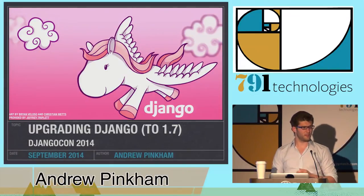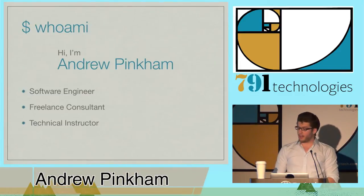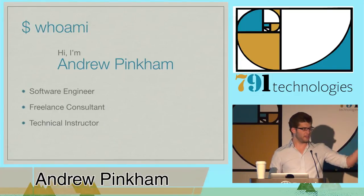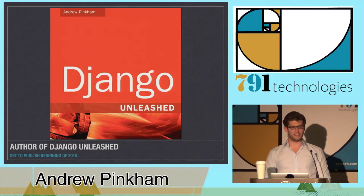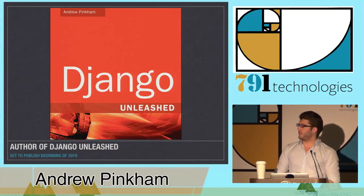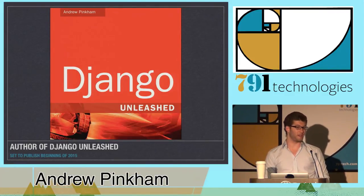Hi, I'm Andrew Pinkham. I'm a half-French, half-American freelance consultant from Austin, Texas. I teach Django in corporate and startup settings, but perhaps most importantly, I'm the author of Django Unleashed, which is currently available in pre-release on Safari Books and is set to be in print form at the beginning of 2015. The book is currently written in Django 1.7, and I've been working in Django 1.7 in alpha and beta since January of this year.